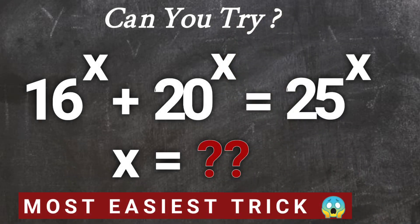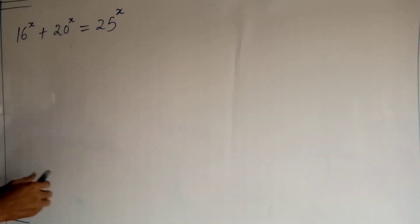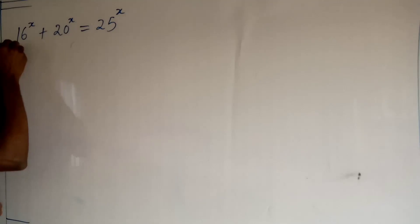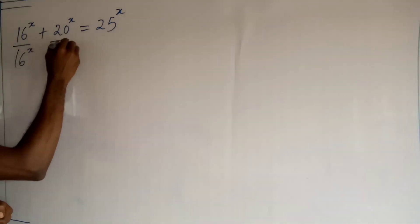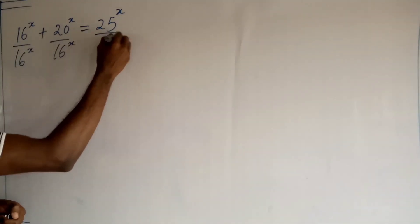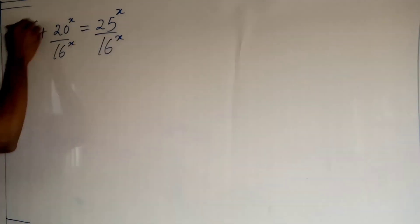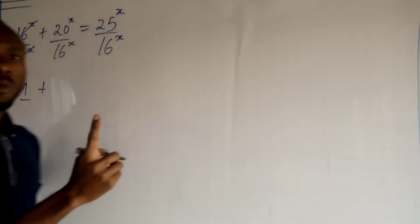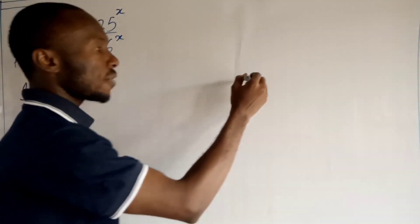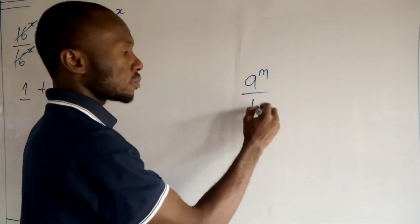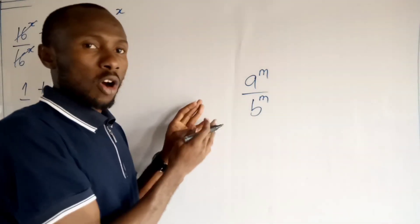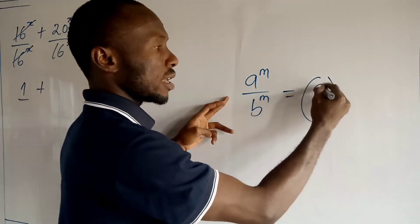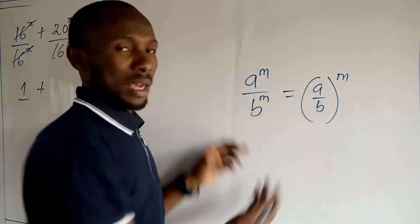The first thing I want to do is to divide both sides by 16 to the power x. So if I divide both sides by 16 to the power x, this side will become 1. Now recall one law in exponents: if I have a to the power n upon b to the power n, I can write it as a upon b, all to the power n.